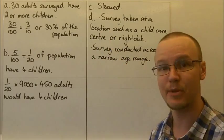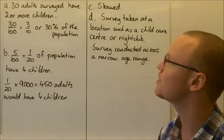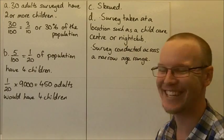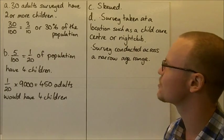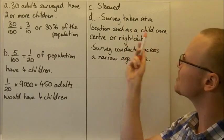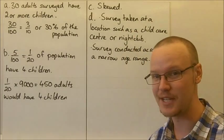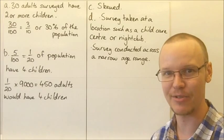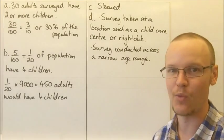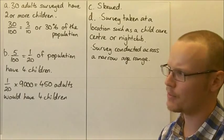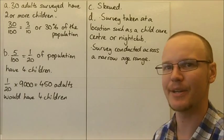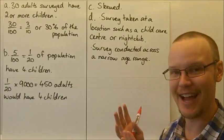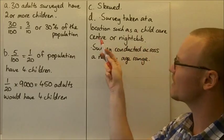D, I've got a couple of options here, but you might be able to think of something else as well. So maybe if the survey was taken at a location such as a childcare centre or a nightclub, at a childcare centre you'd expect all of the adults visiting the childcare centre to have children if they're visiting the childcare centre, maybe even if they're walking past. So that data probably wouldn't have been taken there.